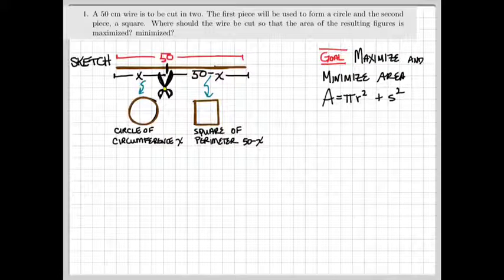You know that the area of a circle is pi r squared. The area of a square is side squared. So the total area will be the sum of those two quantities. In this case, r is the radius of our circle, and s is the side of our square. Since the square is composed of four equal sides, the total perimeter being 50 minus x.